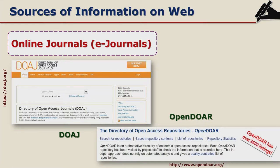There is also the Directory of Open Access Repositories, which is an authoritative directory of academic open access repositories. You can enter a search term or topic in the search box and get links to repositories in that area from across the world. So the material you get through these directories comes from repositories all over the world.